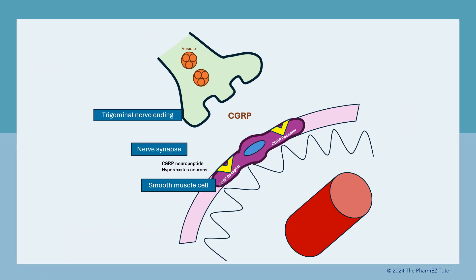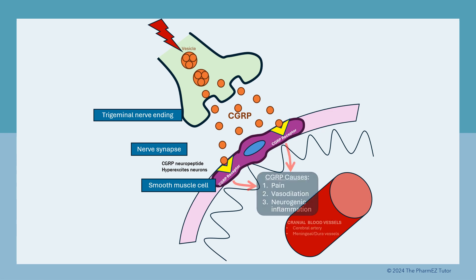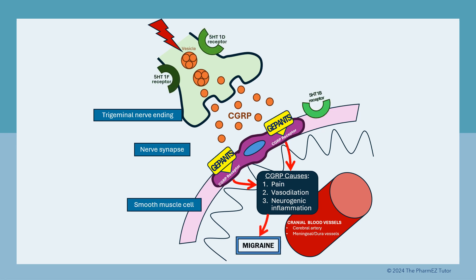Here is a simple diagram that illustrates the migraine process. First, a nerve impulse in the trigeminal nerve ending, shown in light green, causes the release of CGRP neuropeptides into the nerve synapse. CGRP then binds to the receptors on smooth muscle cells located in the cranial blood vessels, the cerebral artery, and the meninges. Activation of CGRP receptors results in vasodilation, inflammation, and pain — leading to the migraine. G-PANs, shown in the yellow-colored rectangle, bind directly to the CGRP receptor sites, blocking the effect of CGRP neurotransmitters.